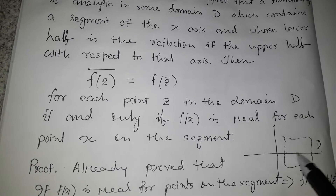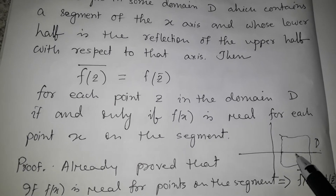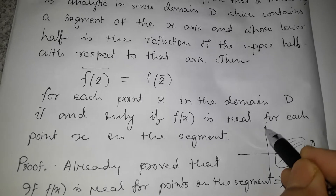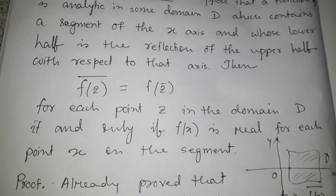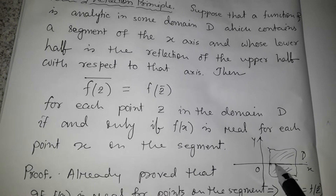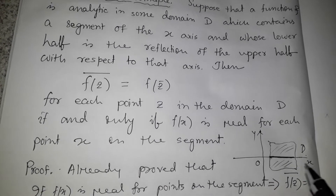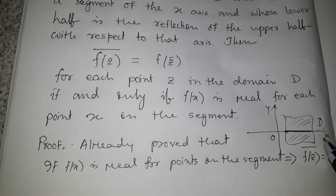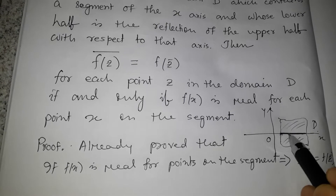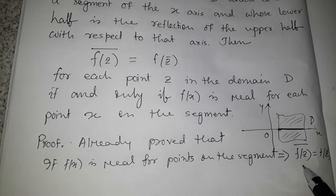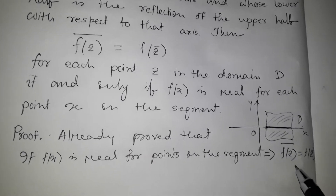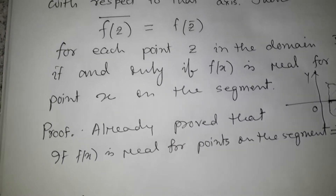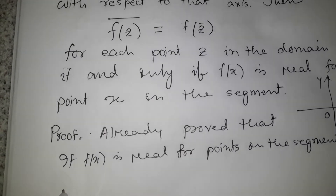This is the domain D, where the lower half is the reflection of the upper half, and this is the line segment containing the x-axis. We have already proved one part: if f(x) is real for points on the line segment, then the conjugate of f(z) equals f of conjugate z. Now we are going to prove the other direction.